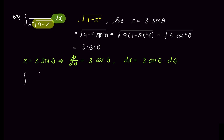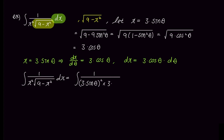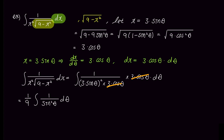Now let's rewrite the problem substituting all x variables with theta. The denominator inside the integral becomes 3 sine theta squared times 3 cosine theta, and dx becomes 3 cosine theta d theta. We can then cancel out the 3 cosine theta in both numerator and denominator. This integral simplifies to 1 over 9 times the integral of 1 over sine squared theta d theta, which can be written as 1 over 9 times the integral of cosecant squared theta d theta. The integral of cosecant squared theta is negative cotangent theta, so the answer is negative 1 over 9 times cotangent theta plus C.